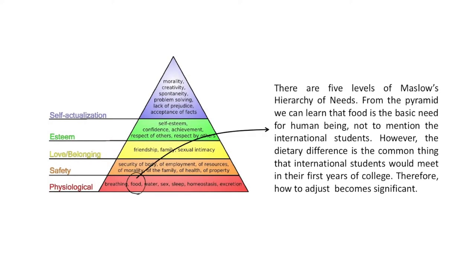From Maslow's hierarchy of needs, there are five levels of human needs. From the pyramid we can learn that food is a basic need for human beings, not to mention for international students. However, dietary differences is a common thing that international students would meet in their first year of college, so knowing how to adjust becomes significantly important.